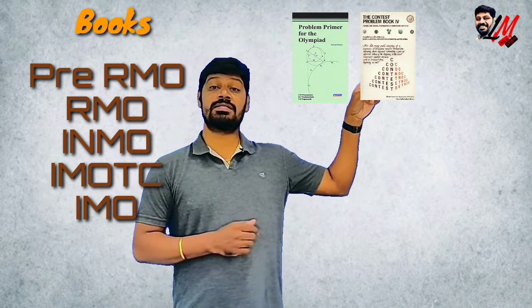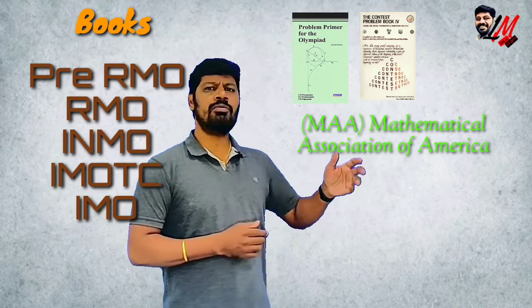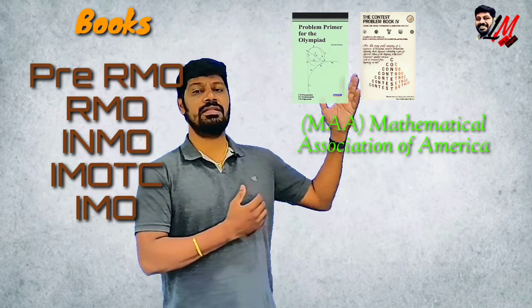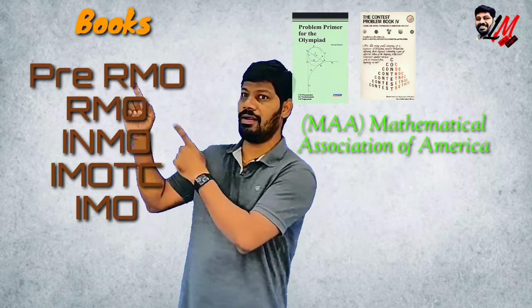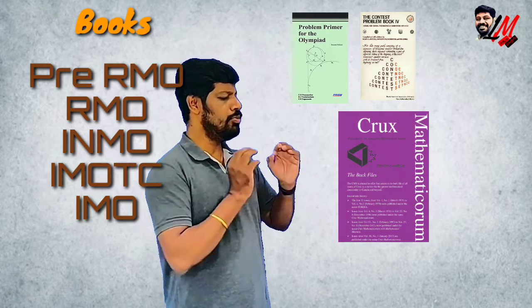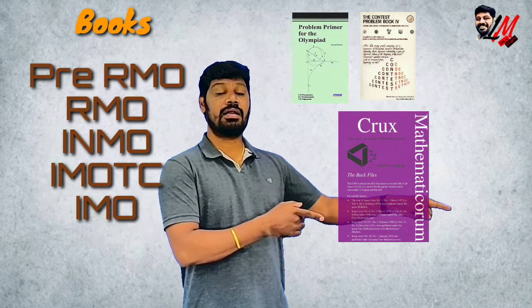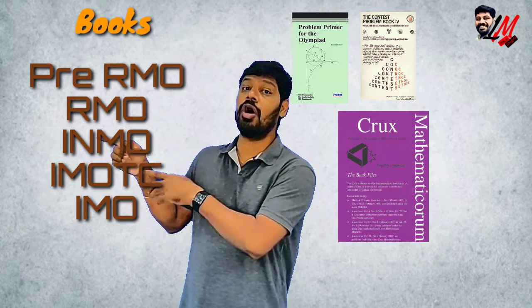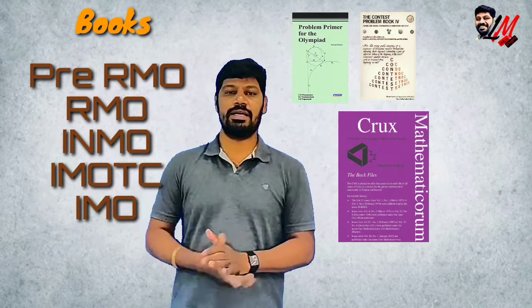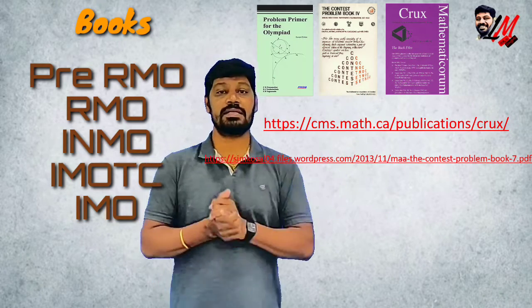Another great resource is the MAA — Mathematical Association of America — contest problems books. Till now, around 10 books have been released by MAA. The problems, discussions and concepts in these books are very helpful in the preparation of pre-RMO. Apart from these two books, another greatest resource is the CRUX Mathematical Journal — a beautiful publication with a large number of problems, even helpful in the preparation of RMO and sometimes INMO as well. I am showing you web links from which you can download the MAA contest problems books as well as the CRUX Mathematical Journal.